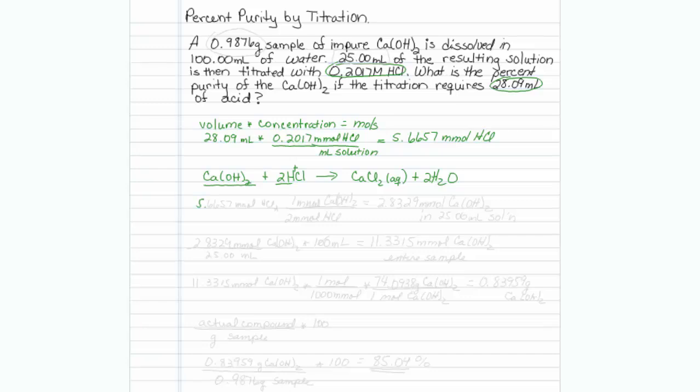So there are 2 HCl's for every 1 calcium hydroxide. So we will take our 5.6657 millimoles of HCl, and we will recognize that for every 2 millimoles of HCl, we have 1 millimole of calcium hydroxide. So dividing that number by 2 gives us 2.8329 millimoles of calcium hydroxide in our 25 mill solution that we titrate.